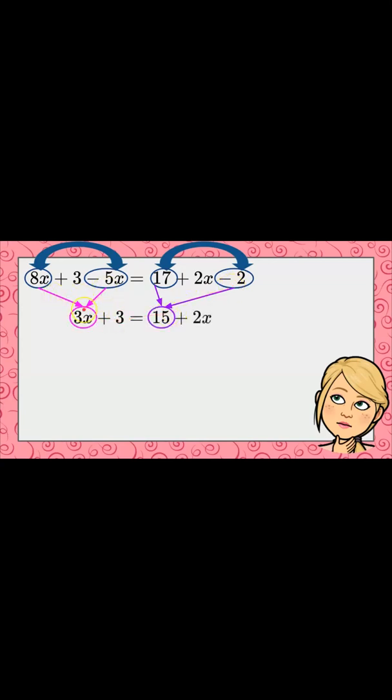So we combined our variable terms that are alike on the left for 3x, and we still have our plus 3. 17 subtract 2 is 15, and we still have our add 2x.